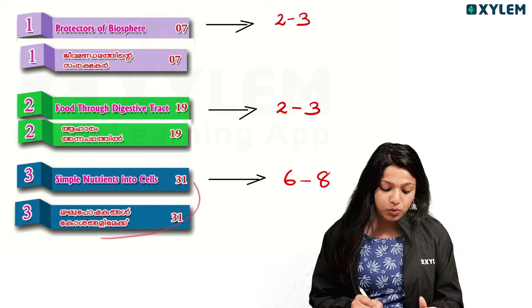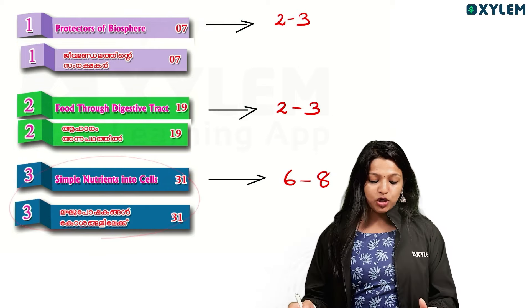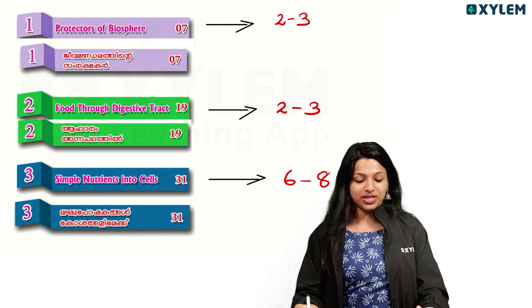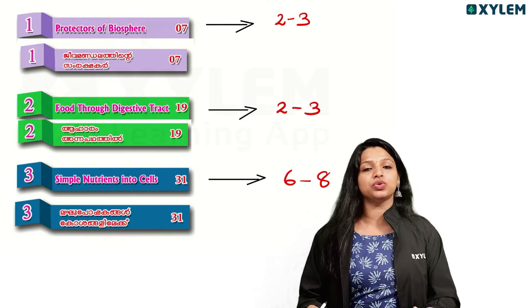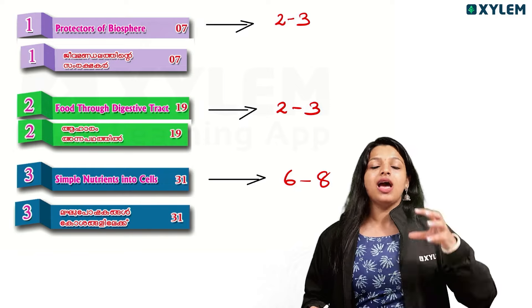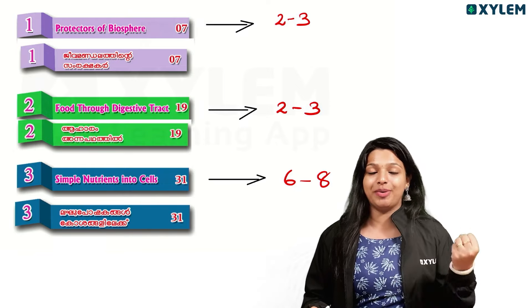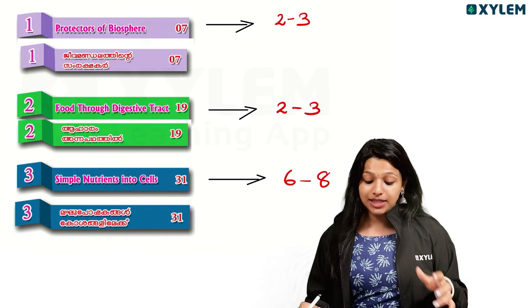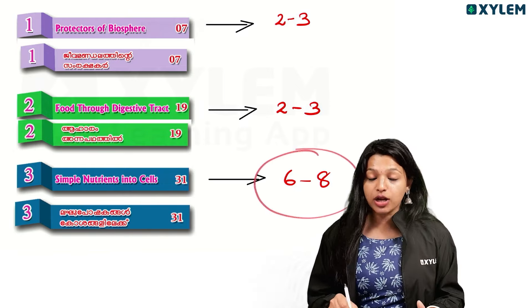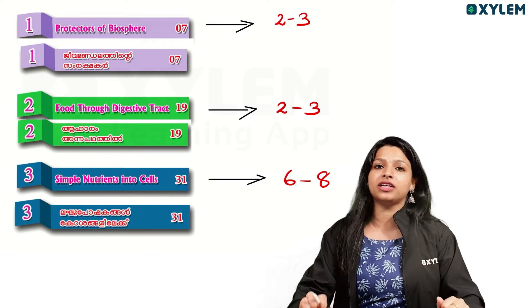The third part covers simple nutrient inducers. That includes our heart and our circulatory system. That is only covered in the 6th part of our 3rd chapter.